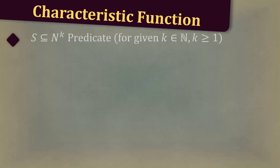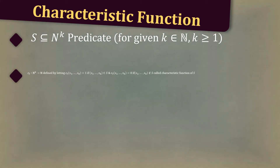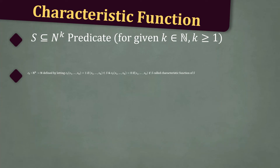Then, let's define the characteristic function. Let S be a subset of the natural numbers to the K, a predicate, for some K a natural number greater than 1. The function C sub S goes from the natural numbers to the K to the natural numbers, and is defined by letting C sub S of X1 to XK equal 1 if X1 to XK is in S, and C sub S of X1 to XK equal 0 if X1 to XK does not appear in S. We call this function the characteristic function of S.